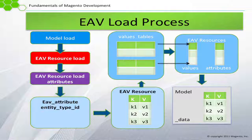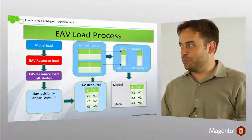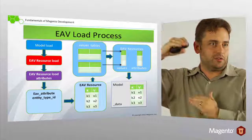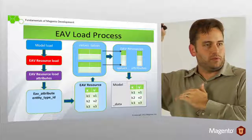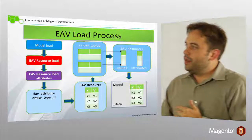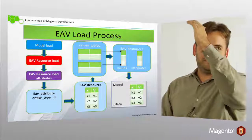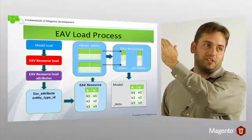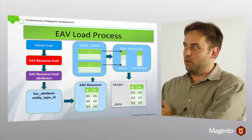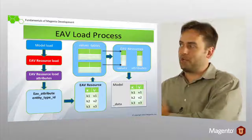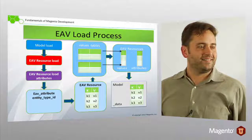EAV is a little more complex because we have to deal with all these different tables and all sorts of different scopes. Model load loads the EAV resource model. The EAV resource model has to load all the attributes to get access to the attribute source models. Then we go into each of the tables - we have all these different tables, all these different sets of results. But the nice thing is, once the data is pressed back onto the model, it's nice and flat.